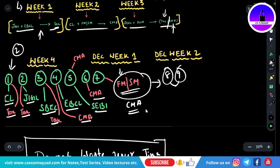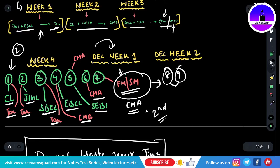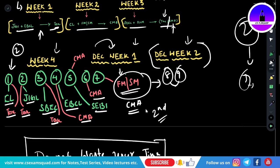By the fourth week, your second revision will be over. If you are not able to complete the second revision within week four, you can drag it to December's first week, but do not extend revision past December's second week. You can give two revisions by this time for an average student. For very dedicated students who started from day one, three to four revisions are possible.